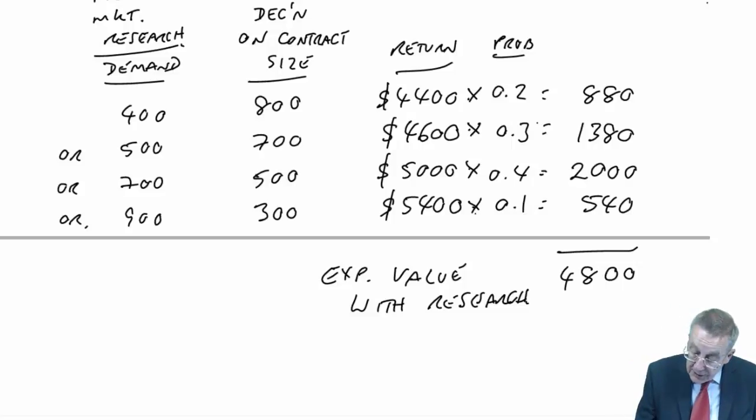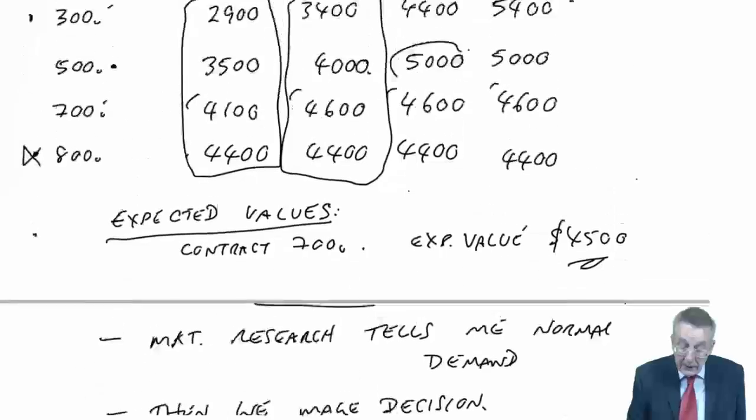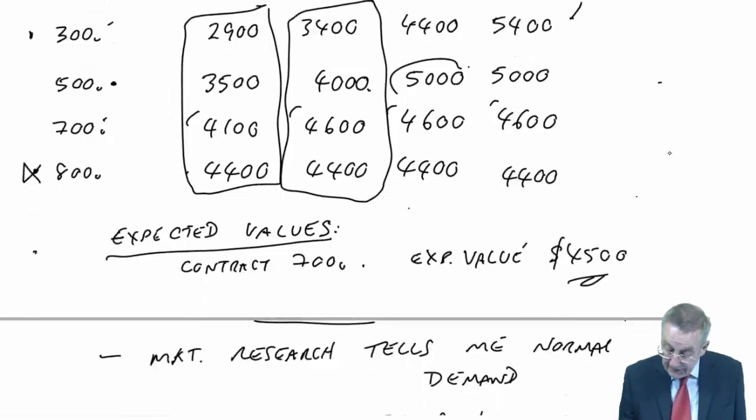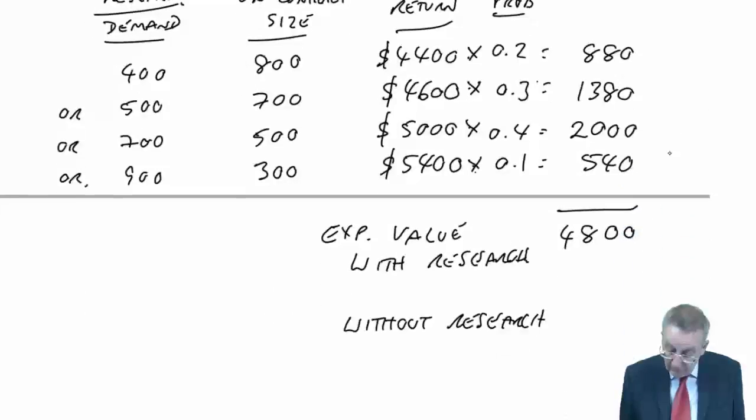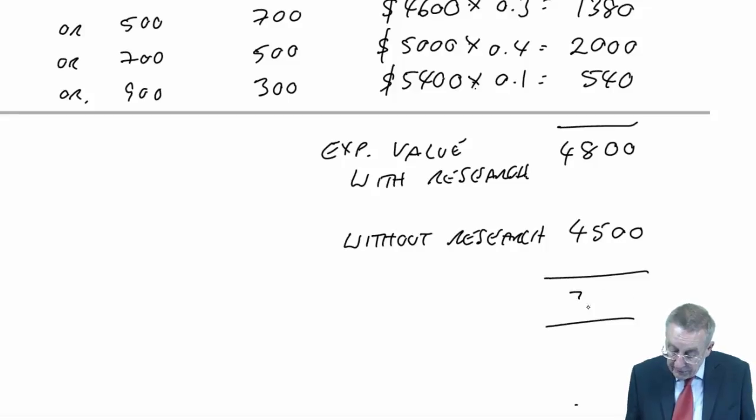Now then, that's all that will happen if I pay for research. They'll come back with one of these four answers. But I don't know in advance which answer they're going to give me. They'll come back with the right answer, and depending on which answer they gave me, I'll make the best decision. I'll end up with one of those four profits. What's the probability they'll tell me demand is 400? It's perfect research. And surely, since we already know there's a probability of demand being 400, we know the probability is 0.2. There must be a 0.2 probability. So there's a 0.2 probability they say 400, and therefore I get 4,400. Similarly, a 0.3 probability they tell me it's 500, a 0.4 probability of it being 700.